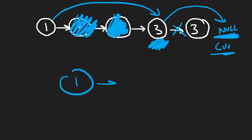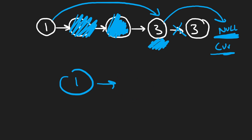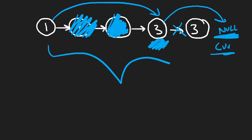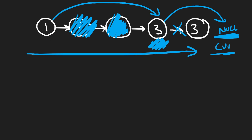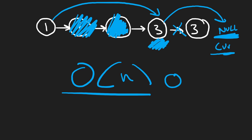As you can tell from the algorithm, we only had to look at each node once — we just iterate over the entire linked list. So the overall time complexity is O(N). We don't need any extra memory, so the space complexity is O(1).